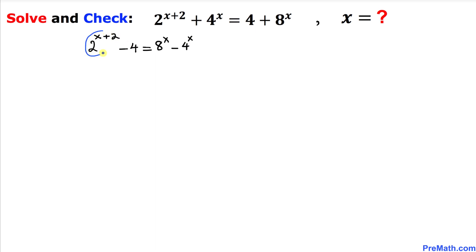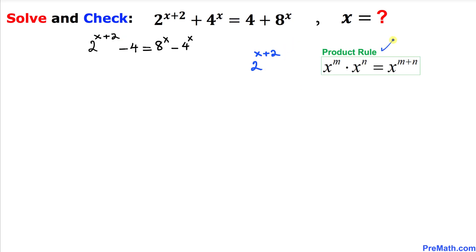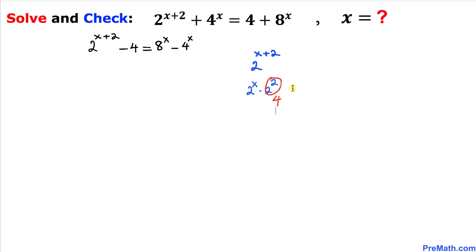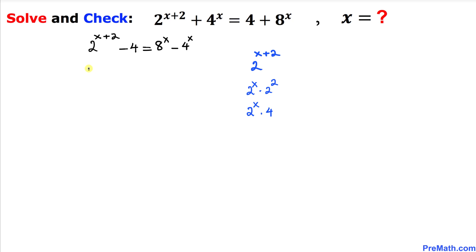Now let's focus on this 2 power x plus 2. I have copied it down and we are going to apply the product rule of exponents. So this can be written as 2 power x times 2 power 2. Since 2 power 2 is the same as 4, this becomes 2 power x times 4. I am going to replace this first term by this simplified form.